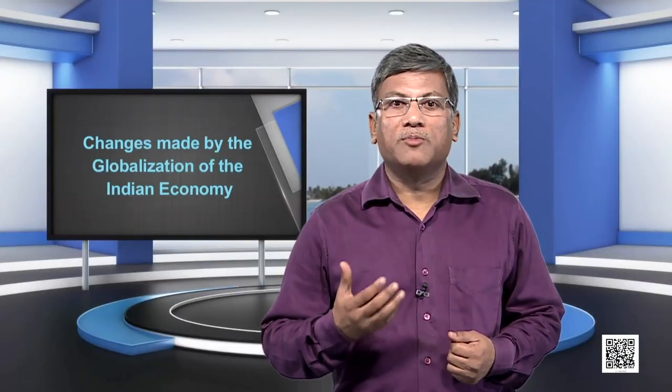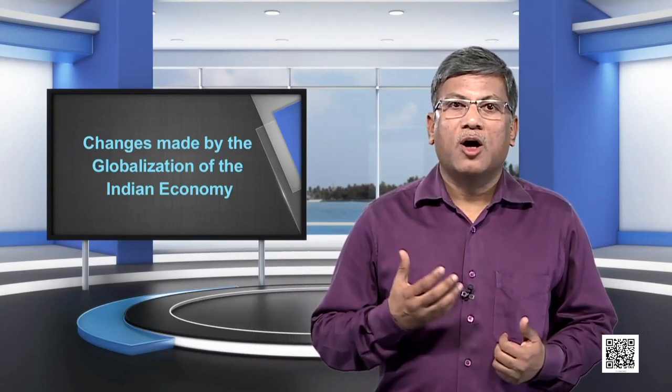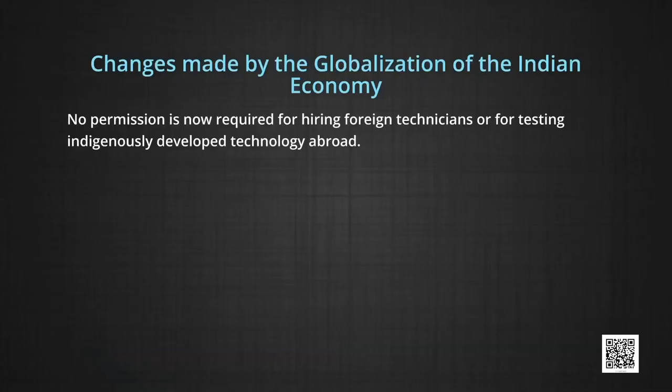Changes made by the globalization of the Indian economy: The new economic policy prepared a specified list of high-technology and high-investment priority industries in which automatic permission will be available for foreign direct investment up to 51 percent of foreign equity. In respect of foreign technology agreements, automatic permission is provided in high-priority industries up to a sum of rupees 1 crore. No permission is now required for hiring foreign technicians or for testing indigenously developed technology abroad.